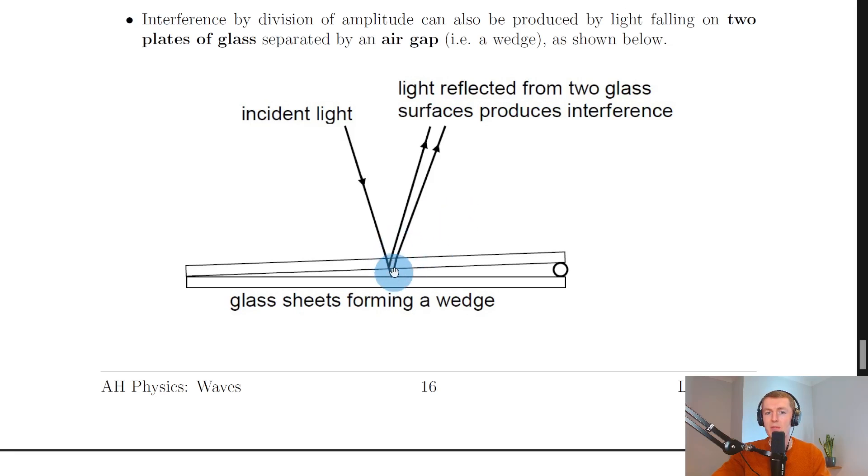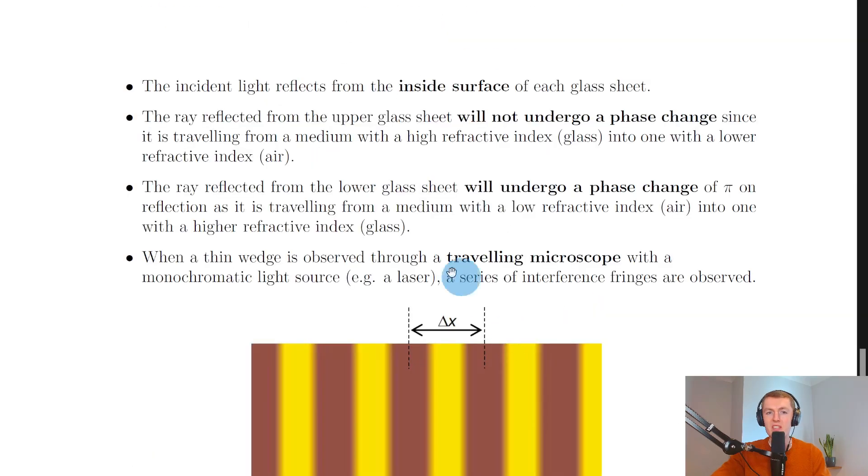However, if we think about the reflection from the air to glass at this second surface, then there will be a pi phase change. The ray reflected from the lower glass sheet will undergo a phase change of pi on reflection as it is traveling from a medium with a low refractive index, i.e. air, into one with a higher refractive index, i.e. the glass.